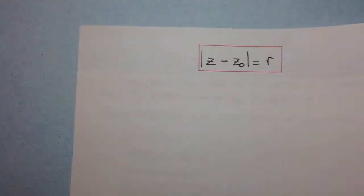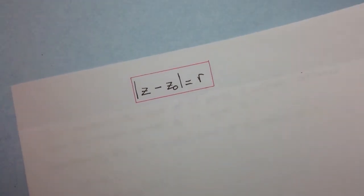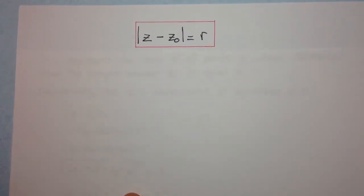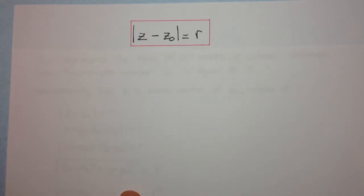Okay, so let's have a look at this. This right here is a standard form in which we can expect to find a locus question. This says that the modulus of z minus z₀ is equal to r. Now let's think about this for a moment. What does this actually mean?